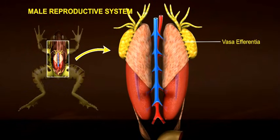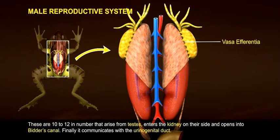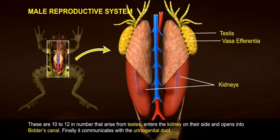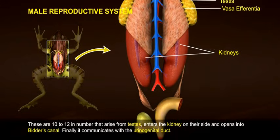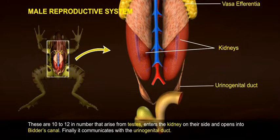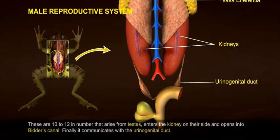Vasa efferentia. These are 10 to 12 in number, arising from the testes. They enter the kidney on their side and open into Bidder's canal. Finally, they communicate with the urinogenital duct.